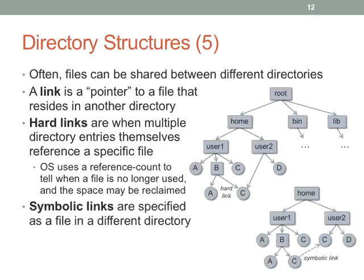We also have symbolic links, which are represented as a file that points to another file. You either have directory entries referring to the file's guts, or you have a file that refers to another file. On Unix, symbolic links are hidden by the mechanisms the OS provides. On Windows, when you create a symbolic link, it clearly lists as a file in the directory — the OS doesn't obscure the fact that it's a symbolic link nearly as much as on Unix.